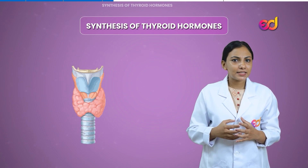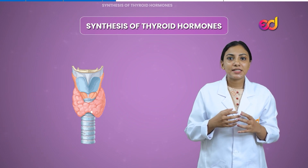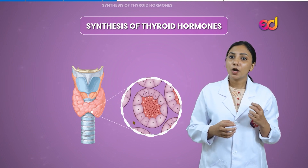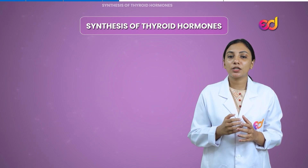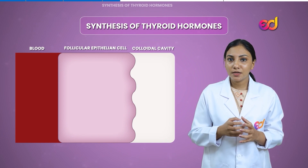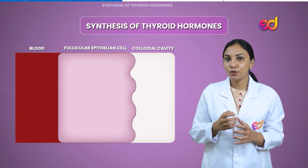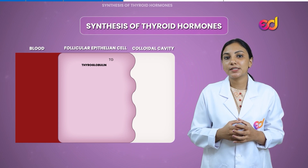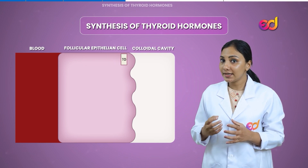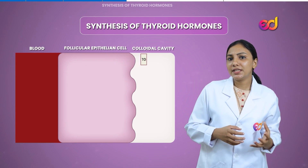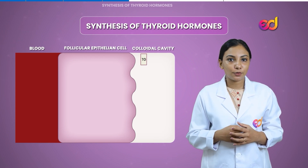Let's take a closer look at the thyroid gland. The thyroid gland is made up of several follicular cells connected by a colloidal cavity in the center. There is something called thyroglobulin — the endoplasmic reticulum in the follicular cells produces these thyroglobulins, which are then packed into a precursor of thyroglobulin by the Golgi apparatus and are stored in the colloidal cavity. We will return to these thyroglobulin precursors and their storage once we come to the synthesis part of thyroid hormones.